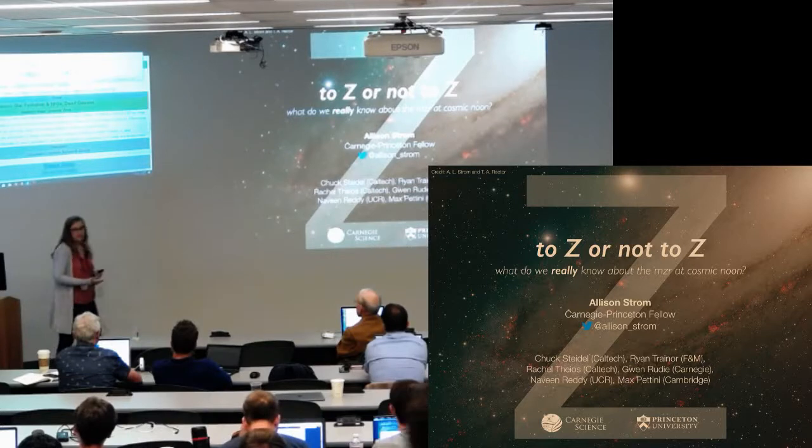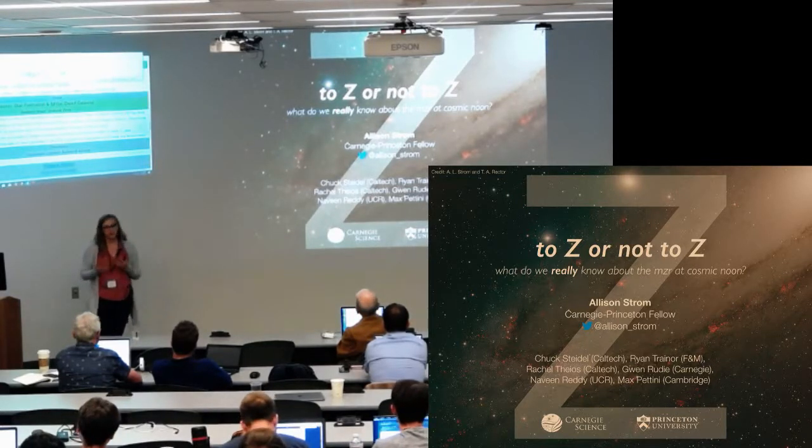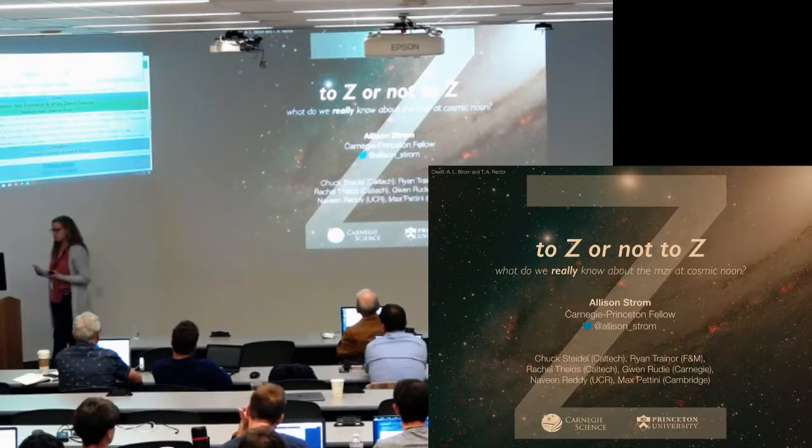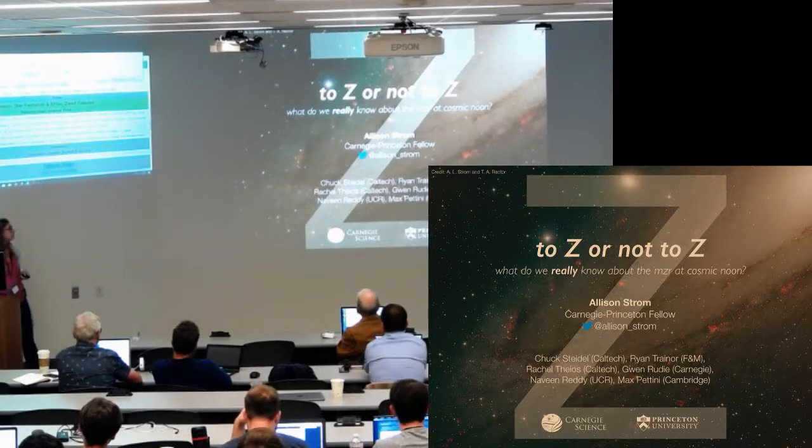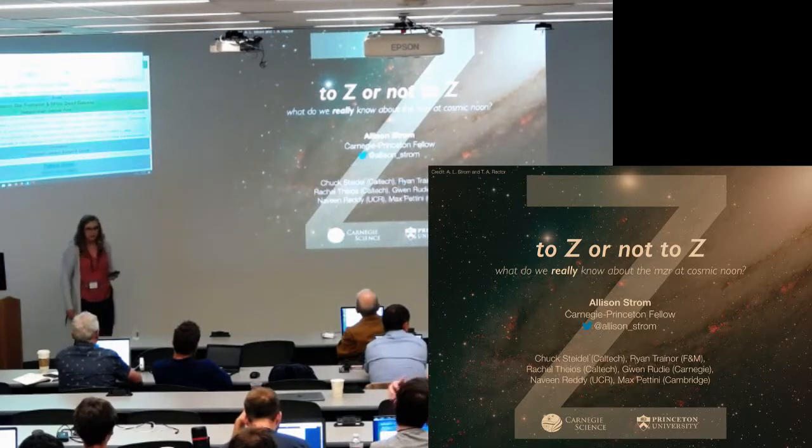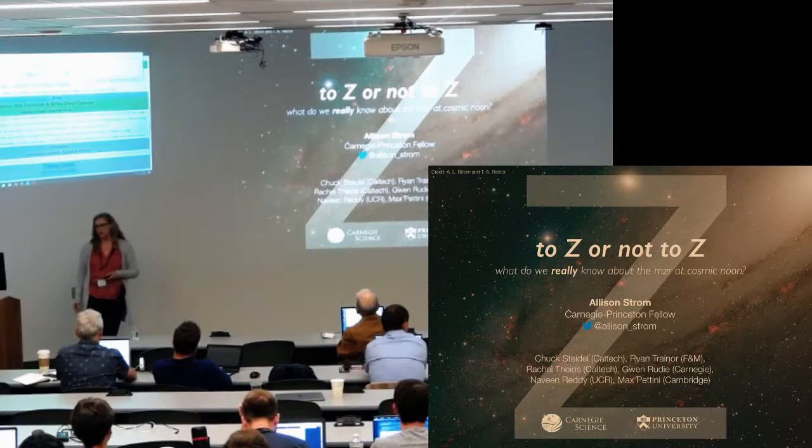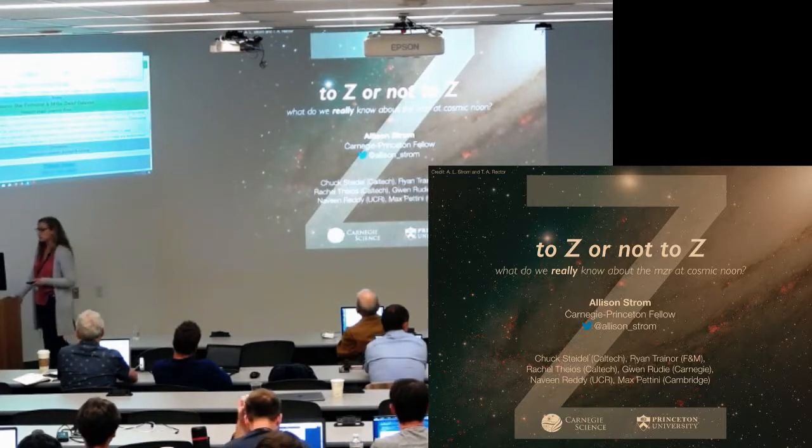So I'm really delighted to be able to be here and talk to you about a problem that has been occupying a lot of my time, the issue of abundance scaling relations at redshift 2, where I think we are, what we've learned over the last few years, problems we're still having and some promising directions for moving forward.